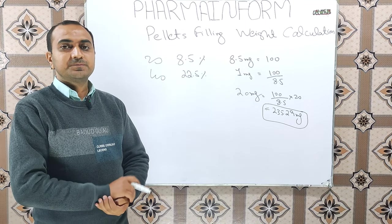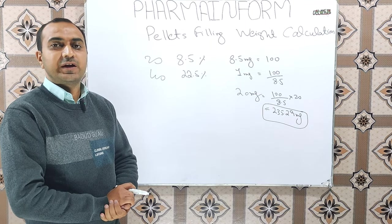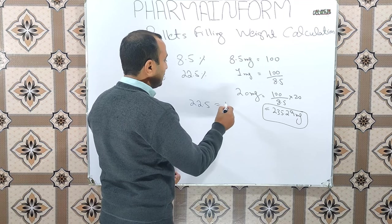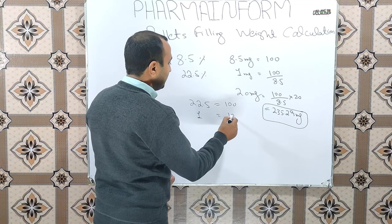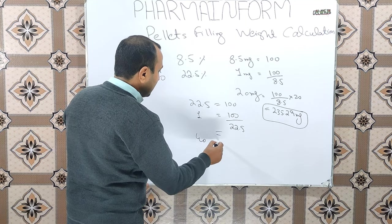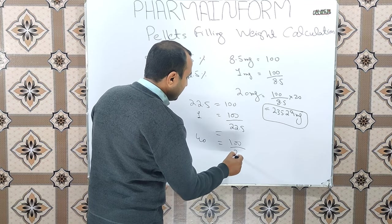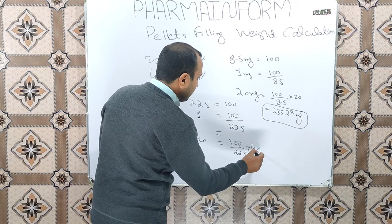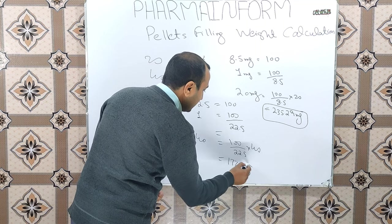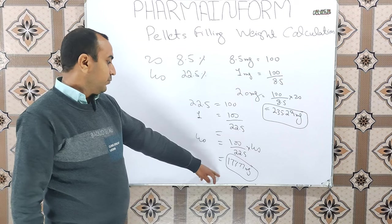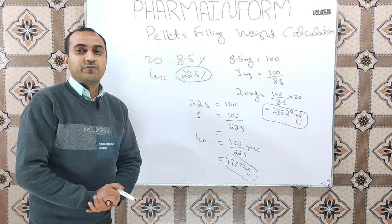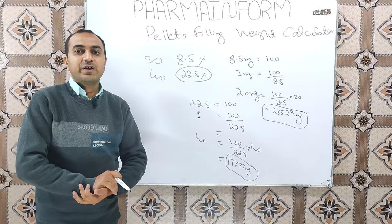In the same way, for 40 mg we have 22.5% enteric coated pellets. 22.5 mg of S-omeprazole is present in 100 mg of pellets. For 1 mg it will be 100/22.5, and for 40 mg the pellet weight = (100/22.5) × 40 = 177.77 mg. So 177.77 mg of 22.5% enteric coated pellets of S-omeprazole is equivalent to 40 mg of S-omeprazole.